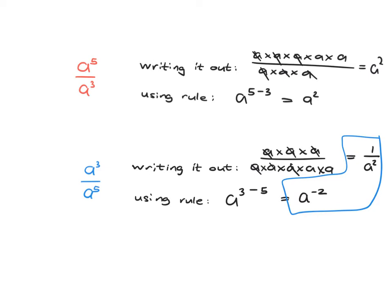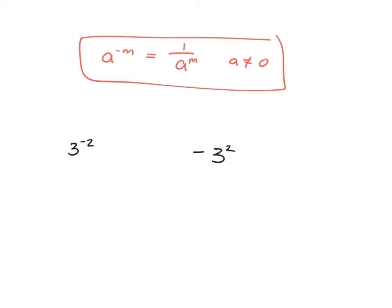Similarly, a to the minus 3 would be equal to 1 over a cubed, 5 to the minus 10 would be equal to 1 over 5 to the 10, and x to the minus 100 would be equal to 1 over x to the 100. That's our meaning of negative in the exponent. So now you have a new fact: a to the minus m is equal to 1 over a to the m, and this is for any number as long as a isn't 0.